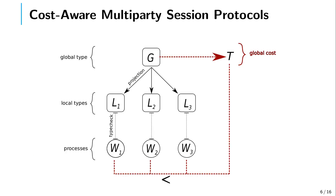This diagram illustrates our main contribution. From global types we extract a global cost, which is a set of cost equations that we can use to compare against the real measured execution times of processes. We prove that these cost equations are an upper bound of the total execution cost for each of those processes according to their operational semantics.